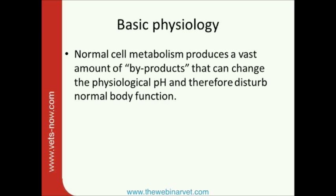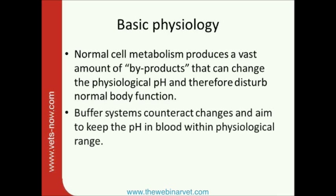These metabolic byproducts are absolutely normal, but they can potentially be harmful and change the normal pH. One big byproduct is H⁺ ions, and they can disturb normal body function tremendously if they were just let loose without control and not buffered. The buffer systems — and there are very different ones — counteract these changes and aim to keep the blood pH within physiological range, more or less just cushioning the impact that H⁺ ions would otherwise have.